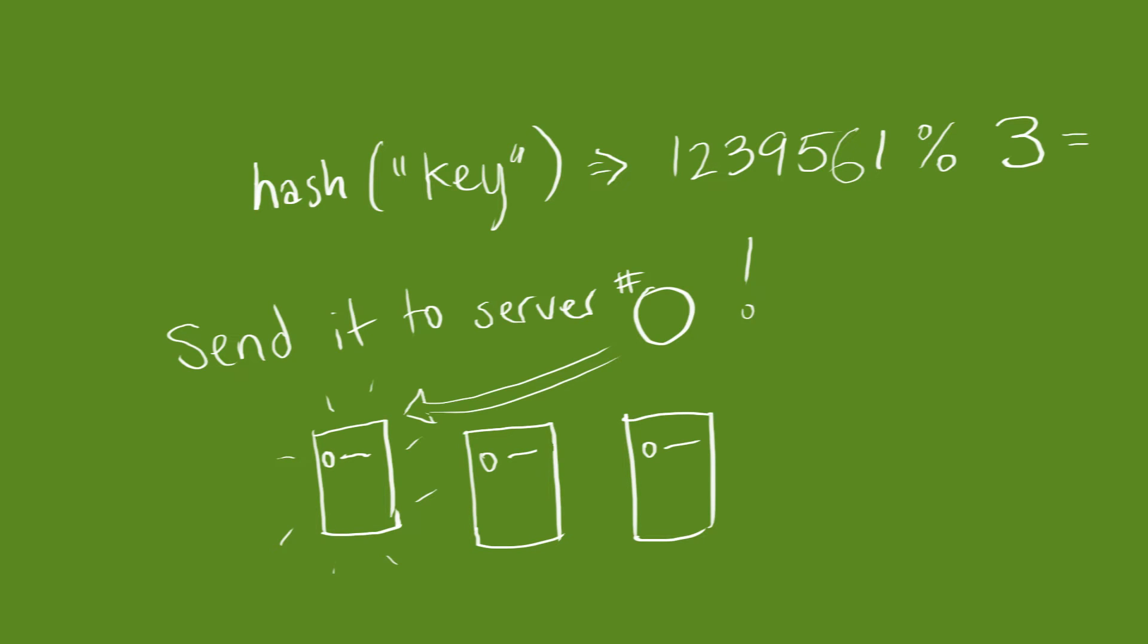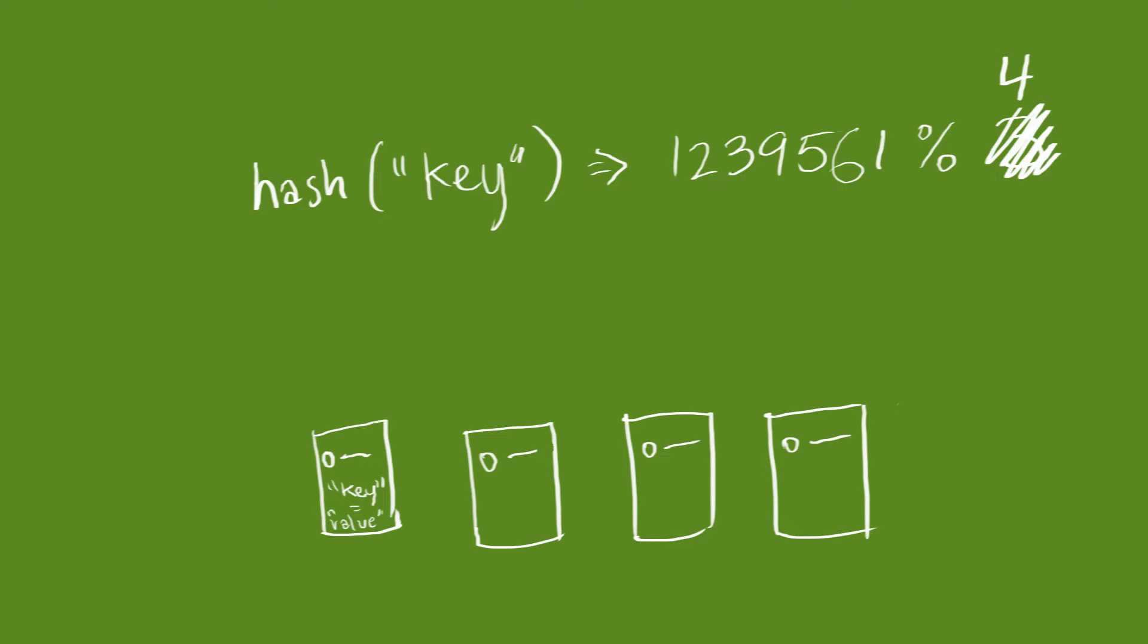But what happens when we add or remove a server? The mod value in our hash function would have to change. This would shuffle all of our keys to different servers, invalidating our entire cache. The resulting load spike would cause a cascading failure in our system, launching all nuclear missiles and ending the world as we know it.